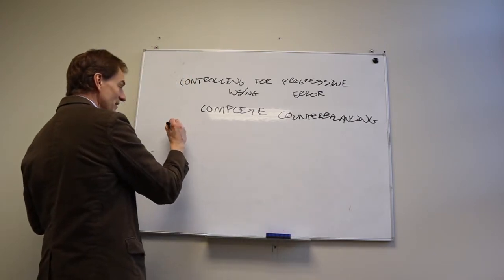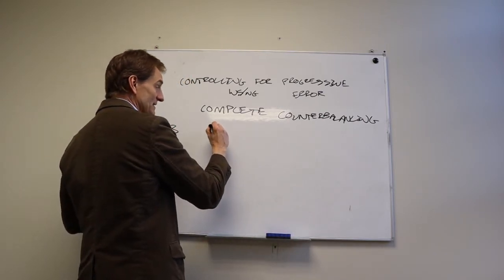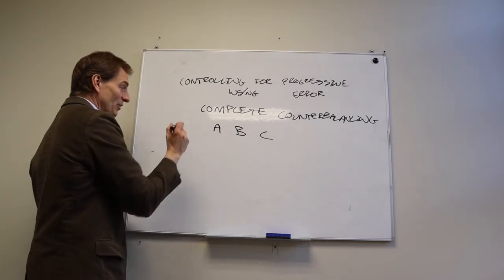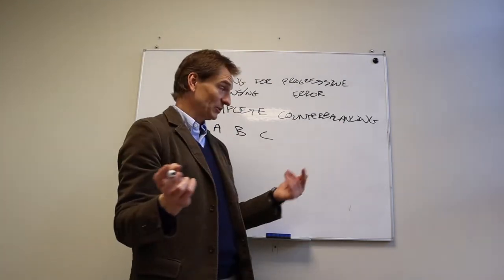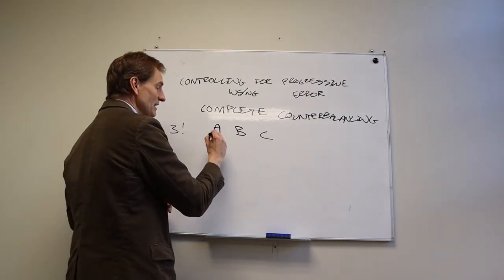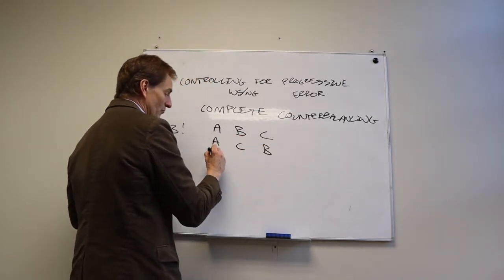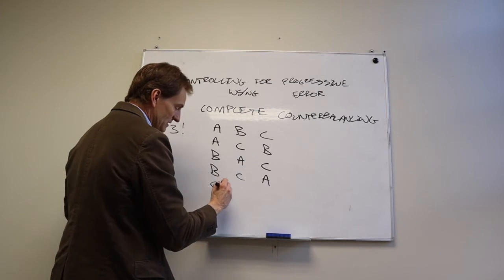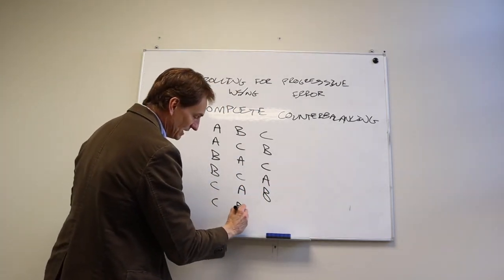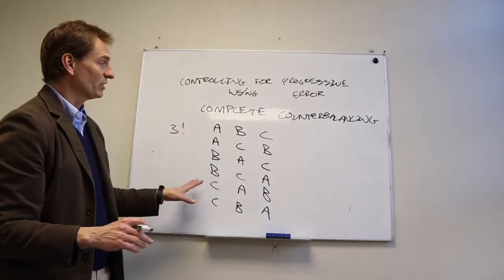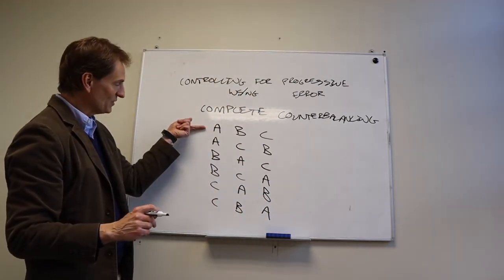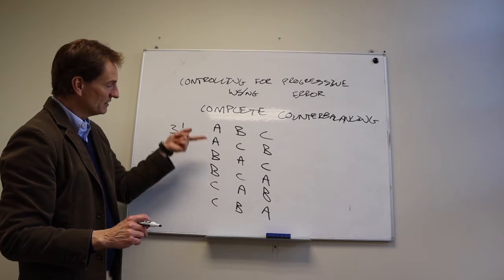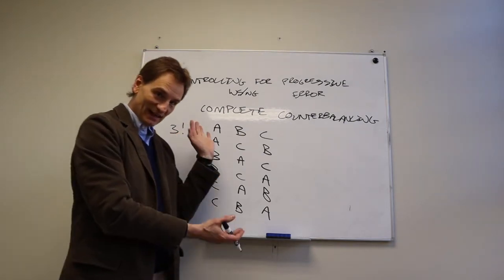Let's say if we have three different treatment conditions, A, B, and C, how many different complete counterbalancing treatment orders do we come up with? Well, three factorial is three times two times one, which is equal to six. So it means we run some people A, B, C; A, C, B; B, A, C; B, C, A; C, A, B; and C, B, A. And so that is complete counterbalancing. So this would be the first person who comes into the study, that's the order they get. Second person, third, fourth, fifth, sixth, seventh, eighth, ninth, tenth. And so you get the idea of how that works.